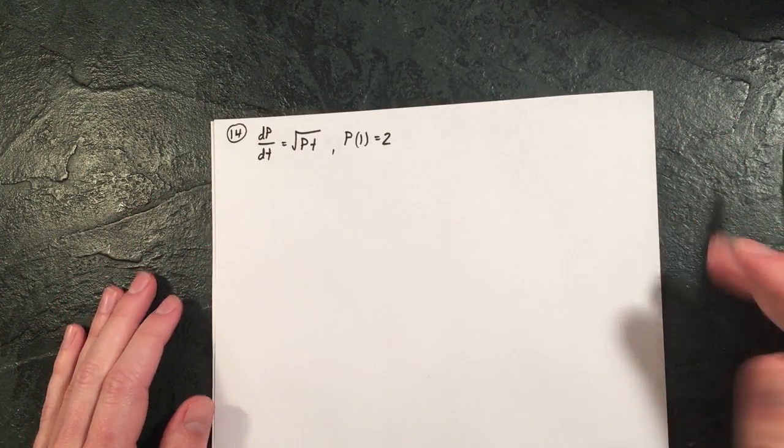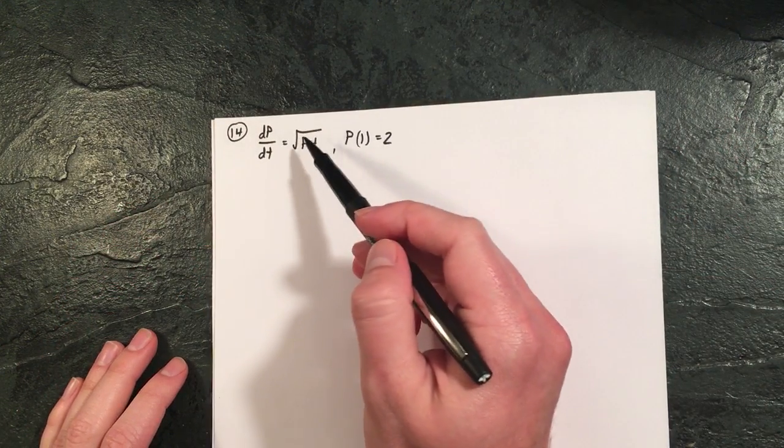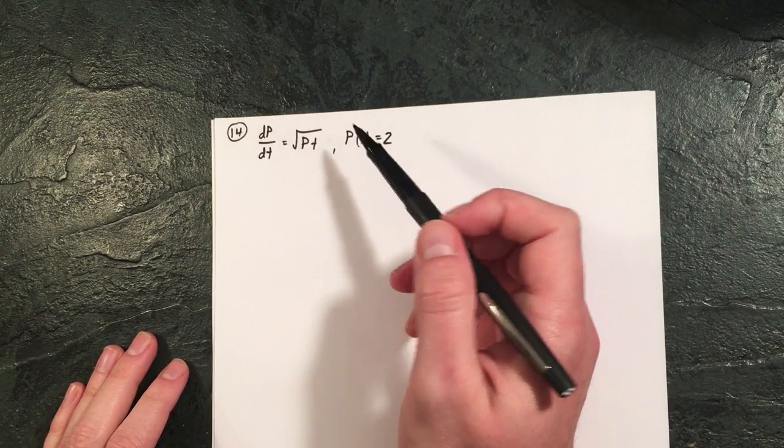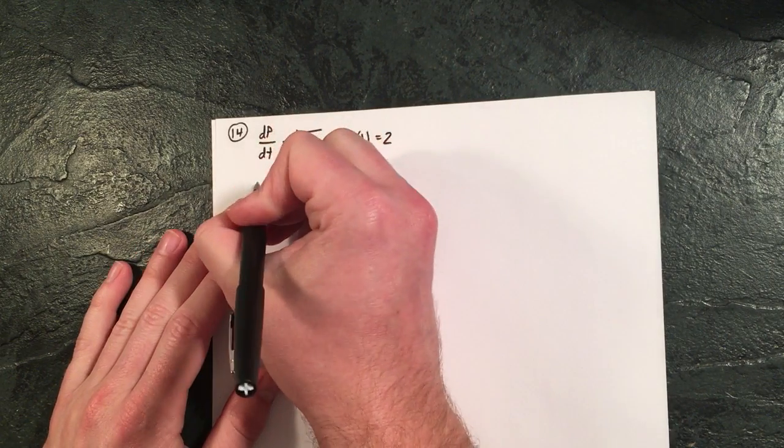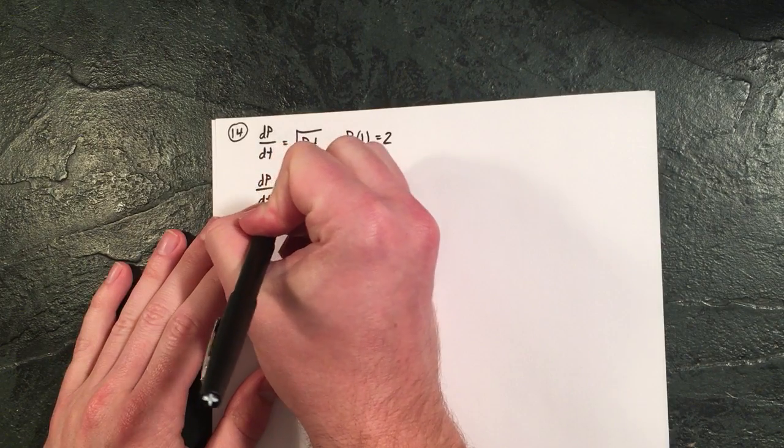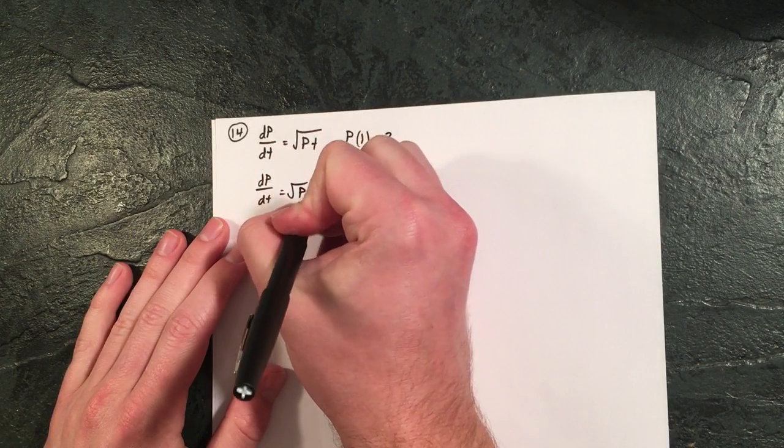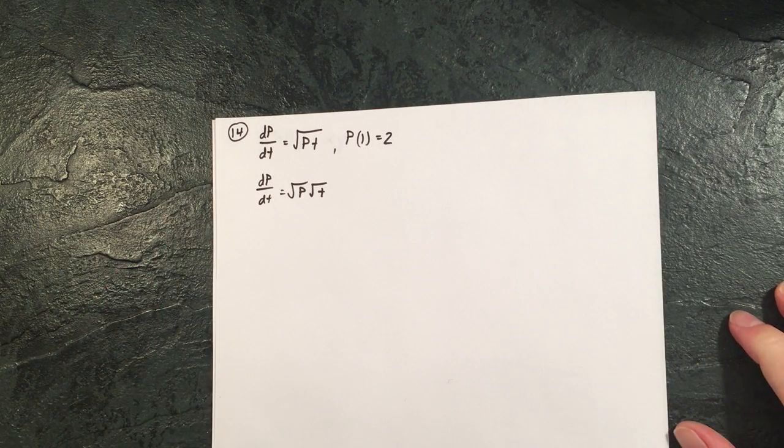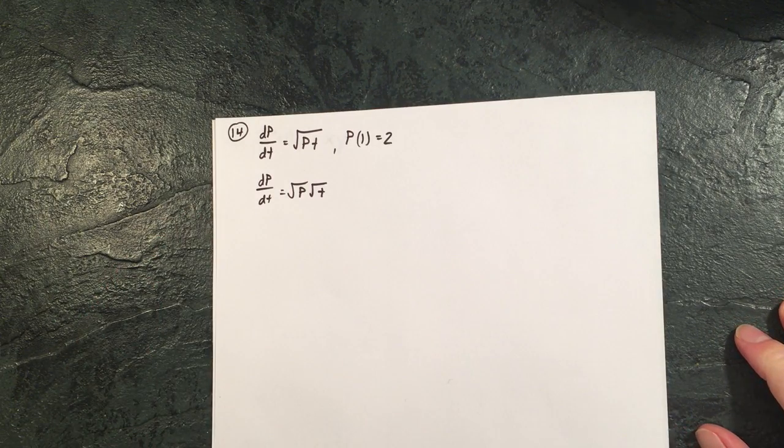The issue here with 14 may be somehow knowing how to split up the square root of p t, and that's understanding a little bit about square roots and how we can manipulate them. So that's like the square root of p times the square root of t.